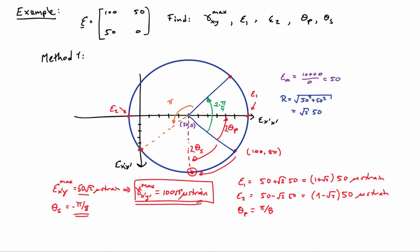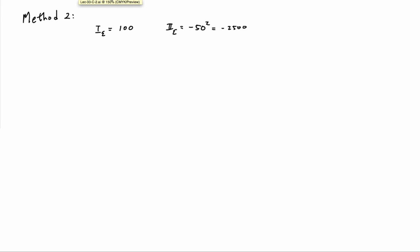The other way that we can do this is not to use the Mohr's circle of strain, but rather to go after the eigenvalues of the problem. And so let me go ahead and just calculate the invariants. The trace of that strain tensor is 100 microstrain.